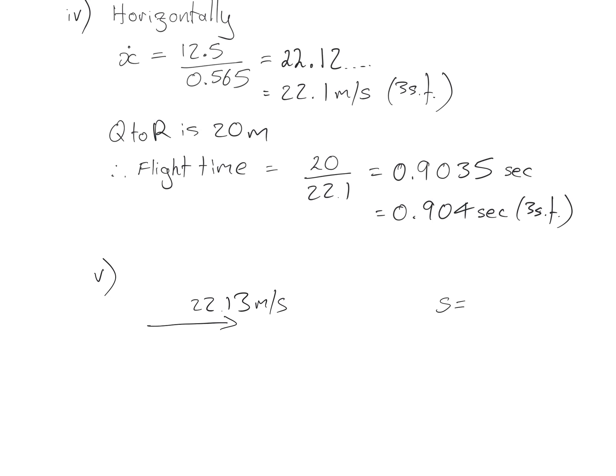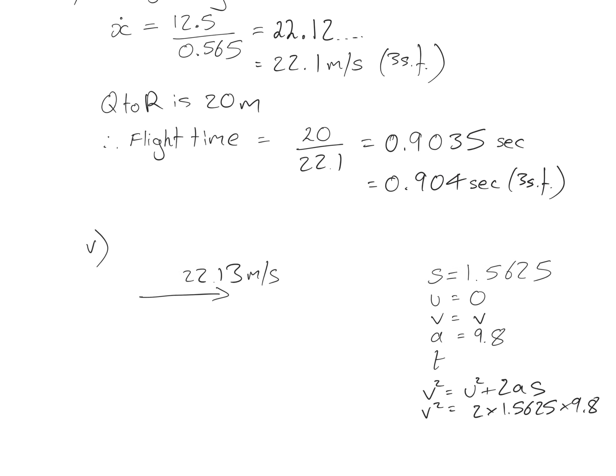Where we had S was 1.5625. U, we didn't know. V, we now want to find out, and A is 9.8. T, we did find out, but let's just use that. So, V equals U plus, oh, sorry, no T. V squared equals U squared plus 2A S. So, V squared equals U is 0, 2 times 1.5625 times 9.8. So, V equals square root of 2 times 1.5625 times 9.8. So, this is using the SUVAT we had back in part 3.